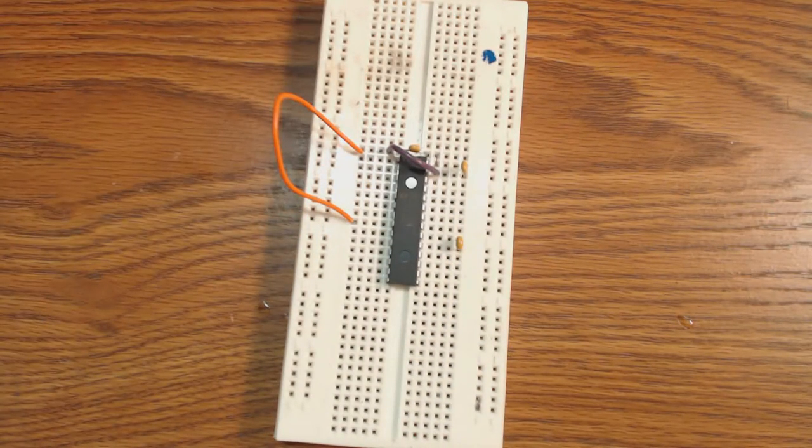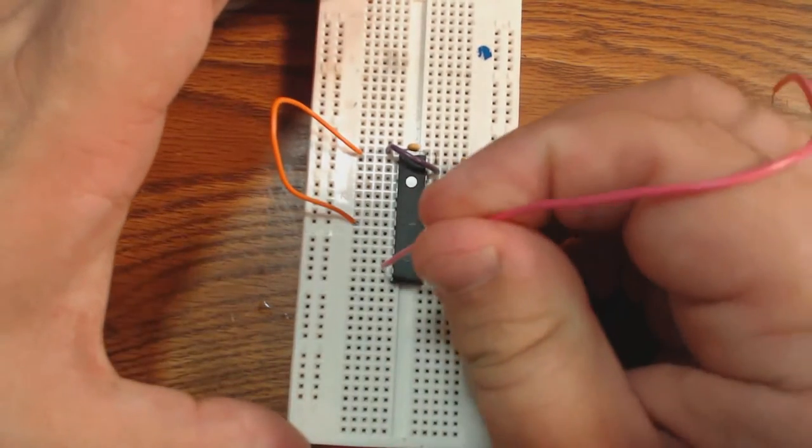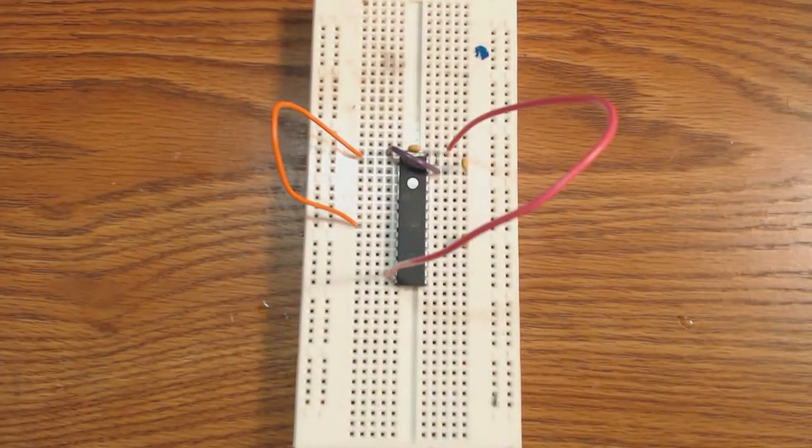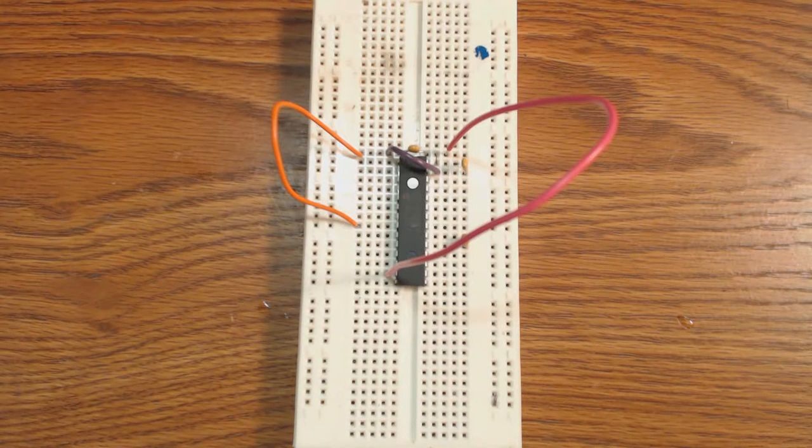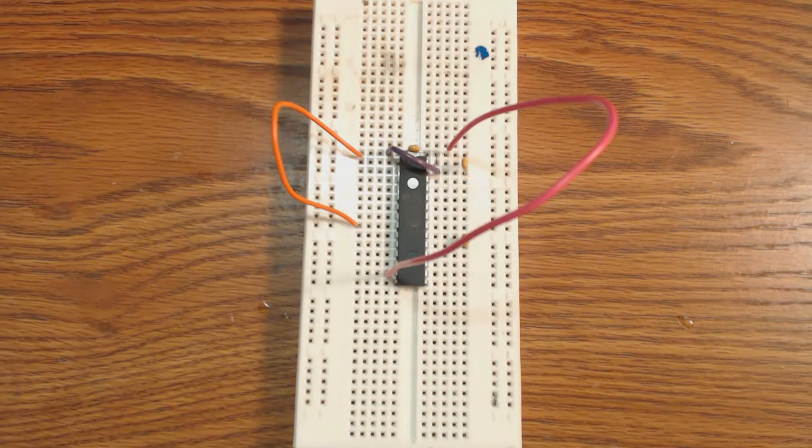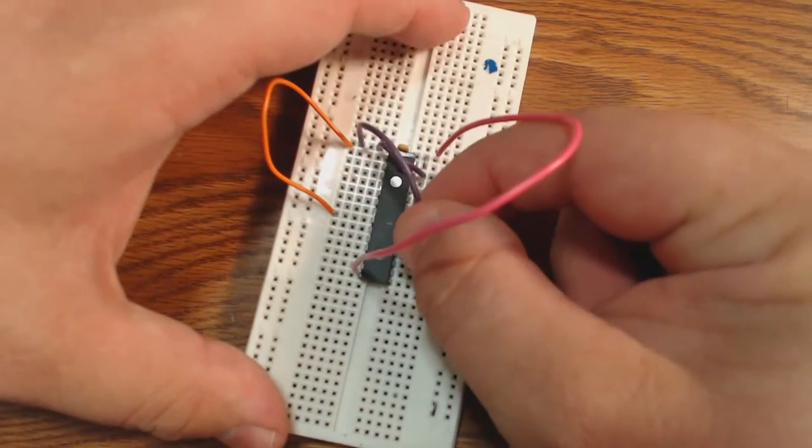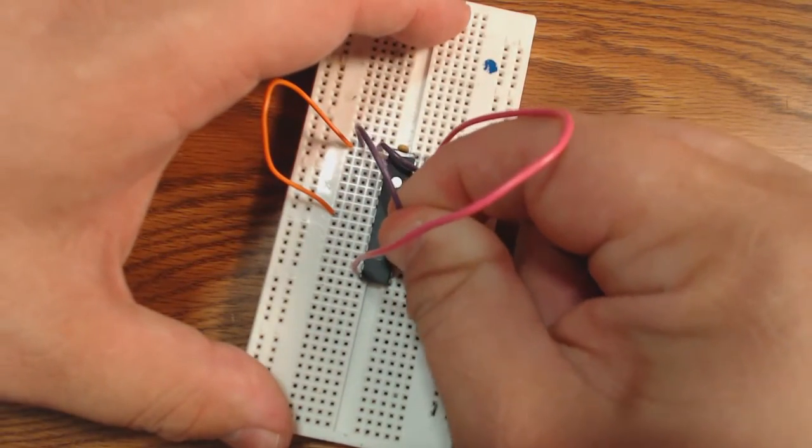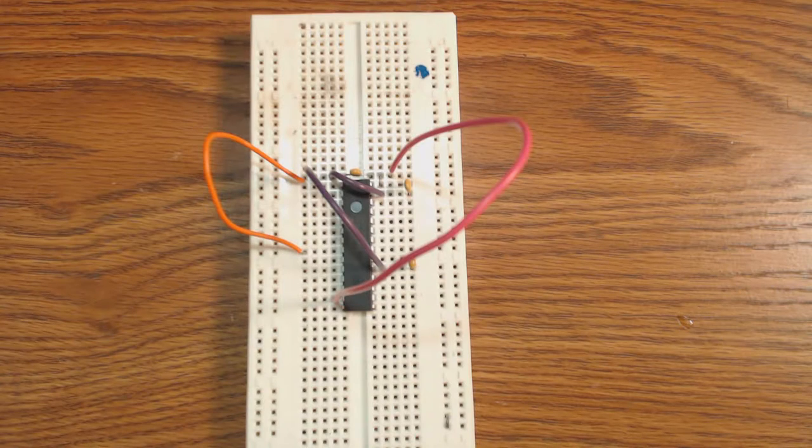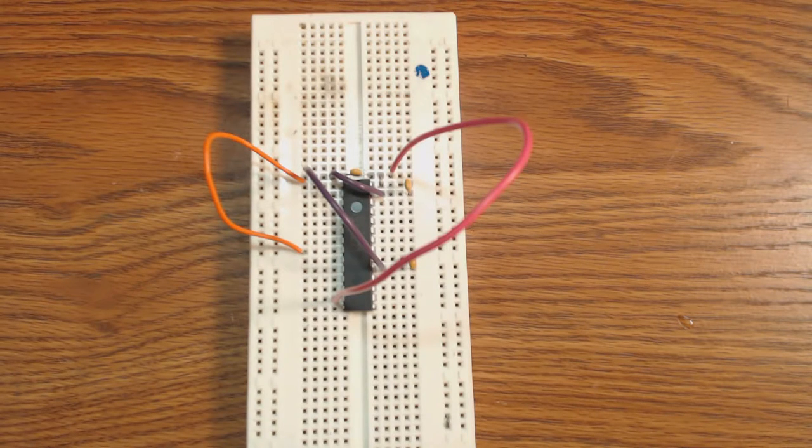These wires are kind of a mismatch color wise which is not fantastic. So now I'm going to connect up this other VSS pin and that VSS pin is pin 8. And then I need the final VDD pin which is pin 13. So now we have our VDD VSS pins all set up.